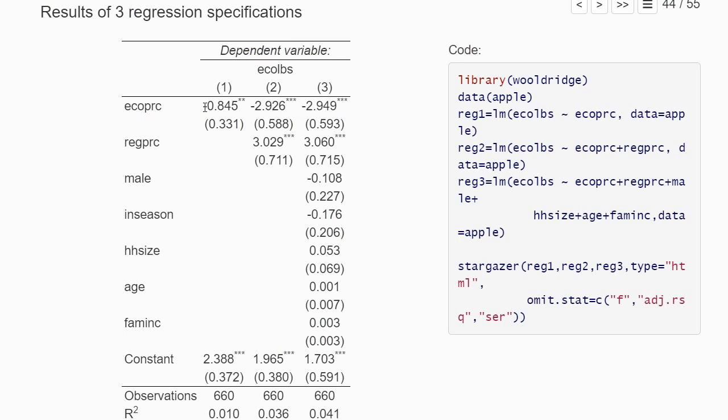Households could buy from both types of apples. In the third regression, we add additional household characteristics like household size, whether the offer was made during apple season, family income, and so on.